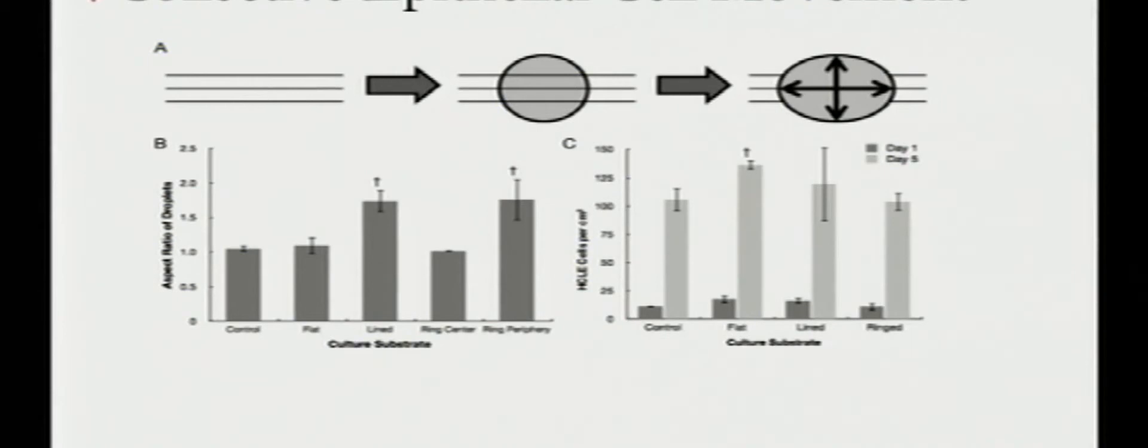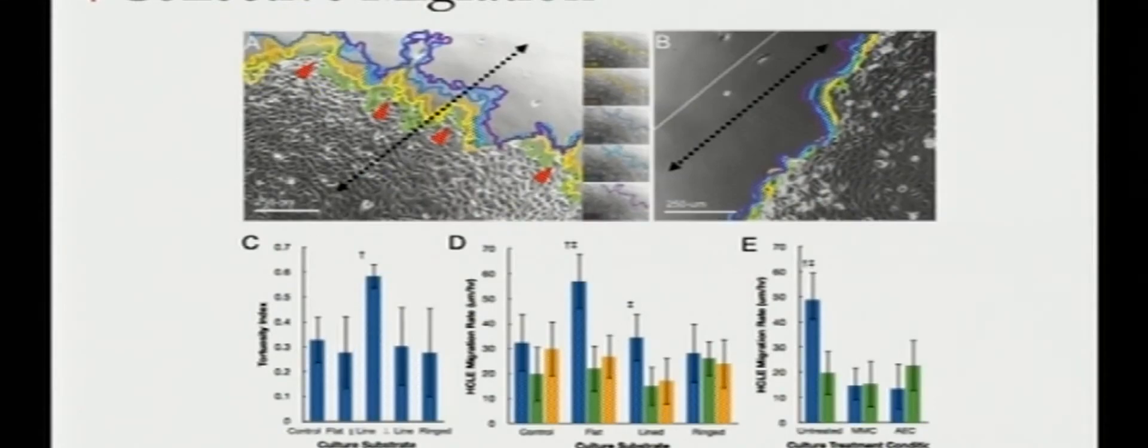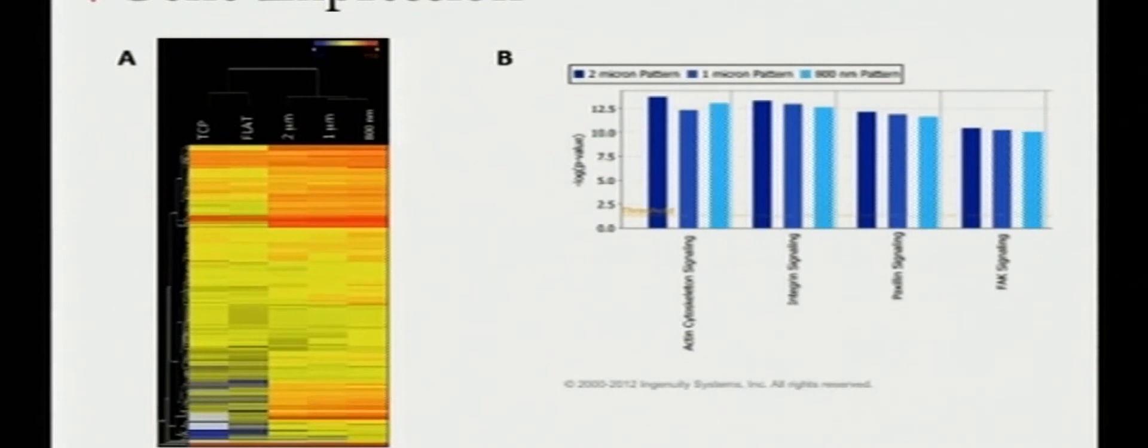We're also able to control the way cells move. So cells, instead of randomly moving to heal, we can direct them using these patterns so they find a more direct route to the center of the cornea as they're healing. We've shown that collectively the silk films will cause little fingers of epithelial cells to grow out in vitro and that these fingers then stick more strongly.